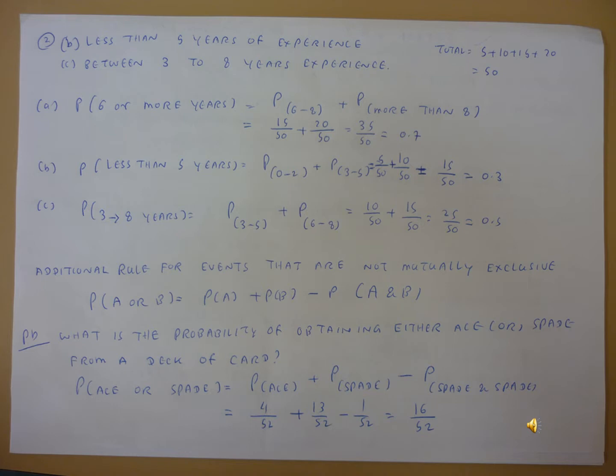The total number of wearers in the workshop can be calculated: zero to two years experience is 5 wearers, three to five years is 10 wearers, six to eight years is 15 wearers, and more than eight years is 20 wearers. Adding these together, 5 plus 10 plus 15 plus 20 equals 50 total wearers.